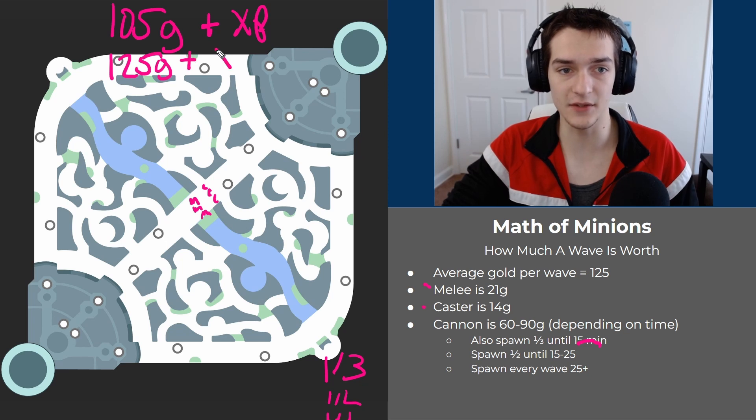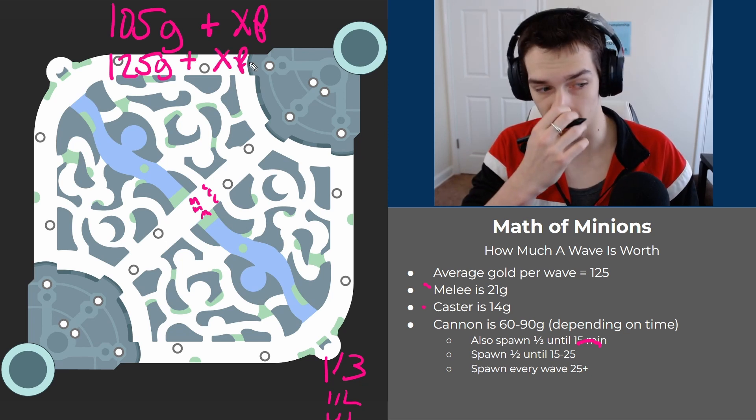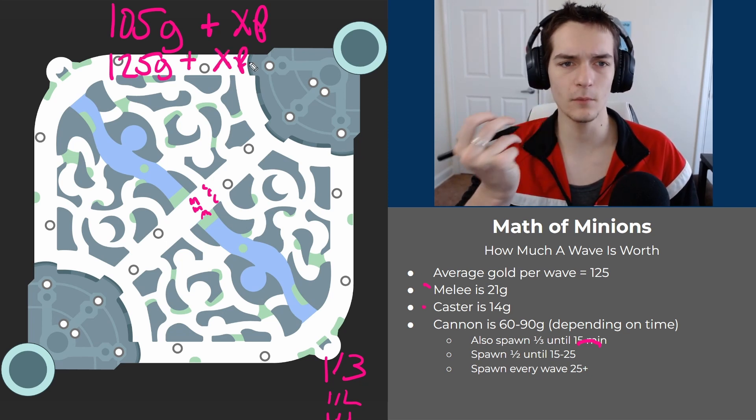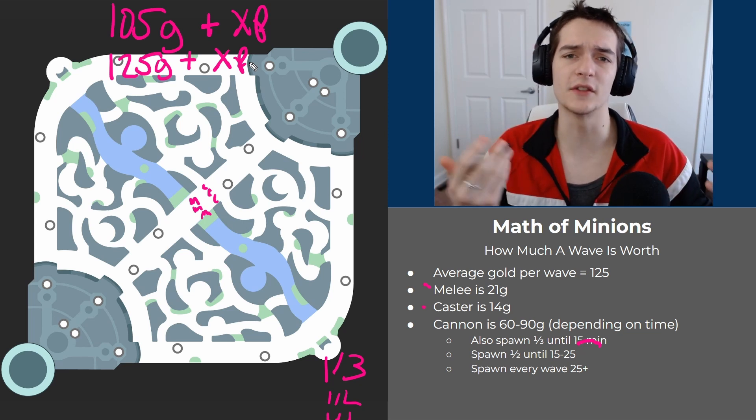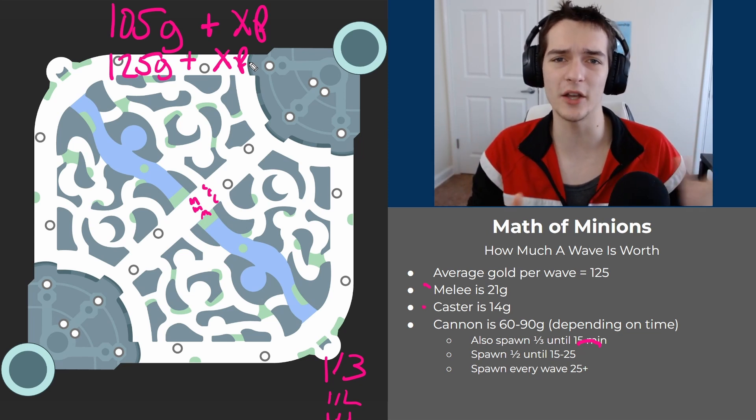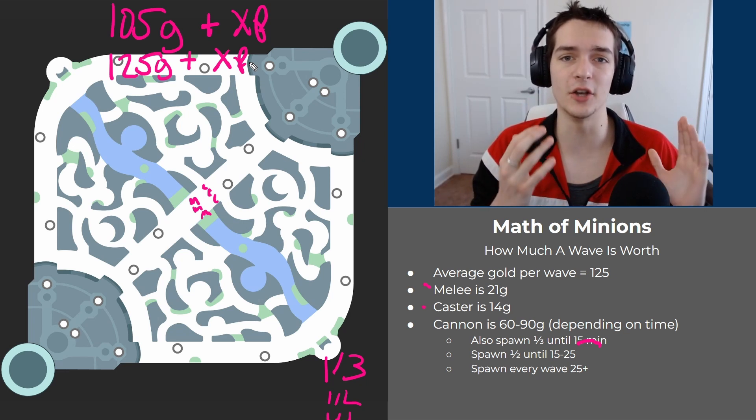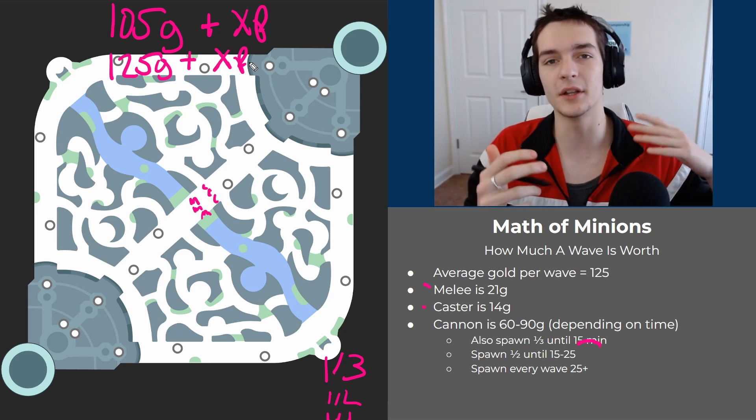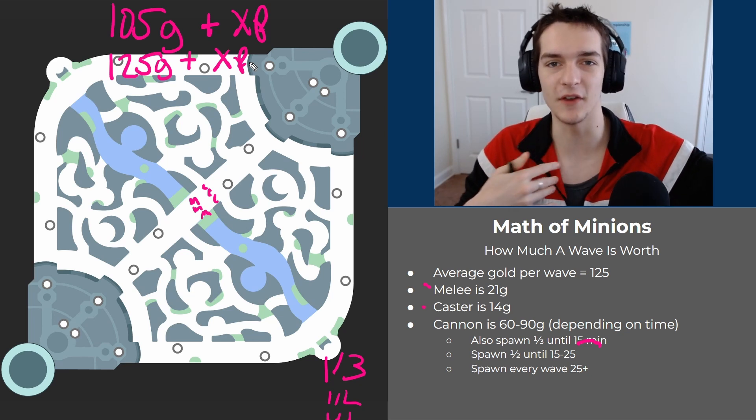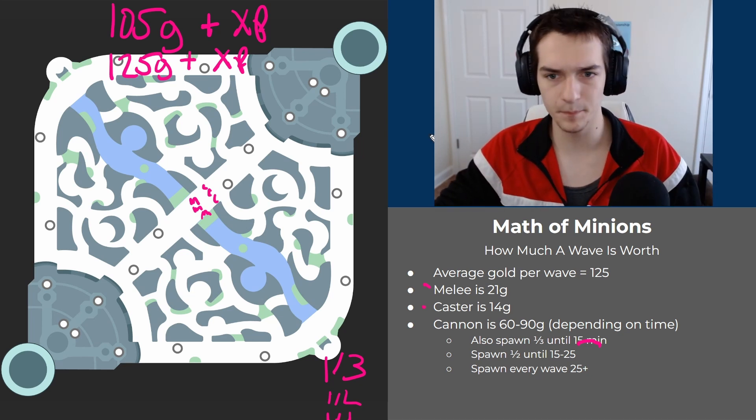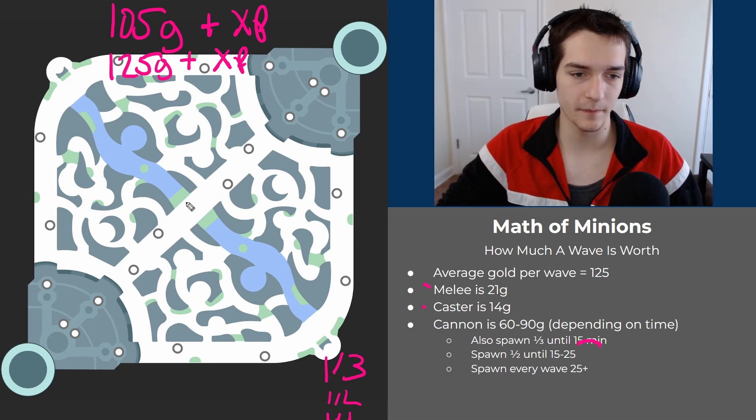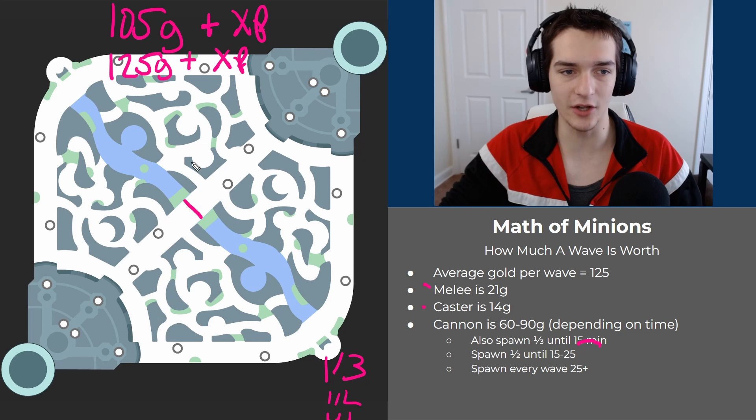These numbers are really important because once you learn what things are worth, you can start comparing things and figure out what the right choice is. One of the most important things I learned from my journey from gold to diamond was literally just comparing the numbers. If we know how much a minion wave is worth, we can figure out when to roam. I'm going to talk about something I call the opportunity cost of a minion wave.